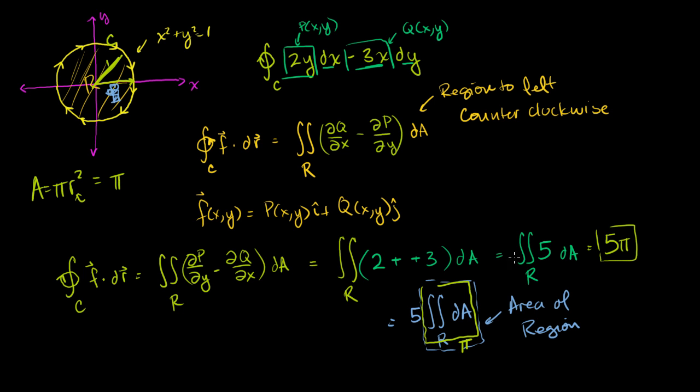And remember, the reason why it wasn't minus 5 pi here is because we're going in a clockwise direction. If we were going in a counterclockwise direction, we could have applied the straight up Green's theorem and we would have gotten minus 5 pi. Anyway, hopefully you found that useful.